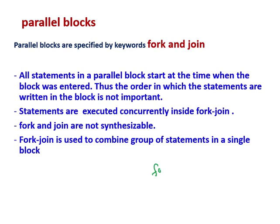This fork and join block starts with fork and ends with join. Whatever is written inside — let's say there are four statements — all the statements run in parallel and independently. So at time step zero, all four statements are evaluated and executed in parallel, not sequentially.